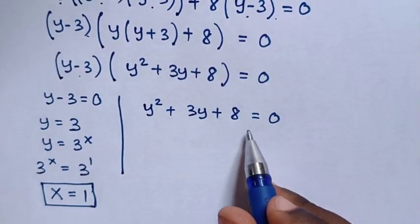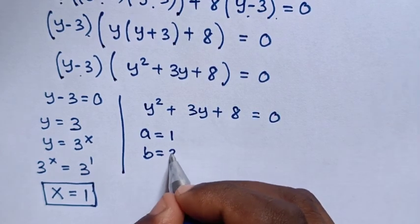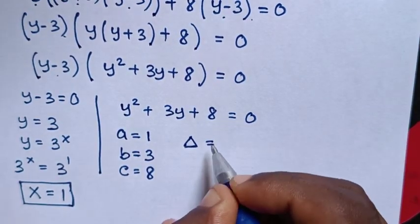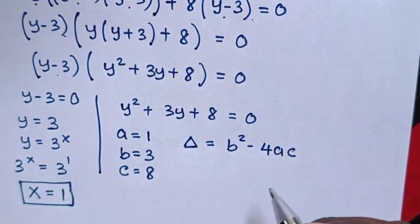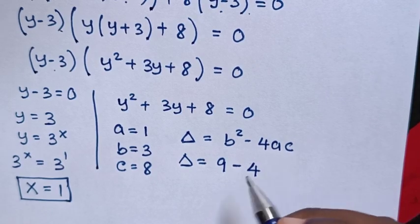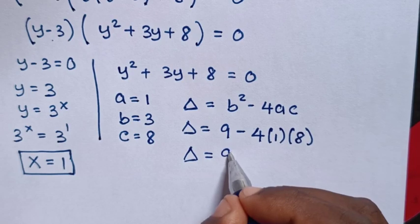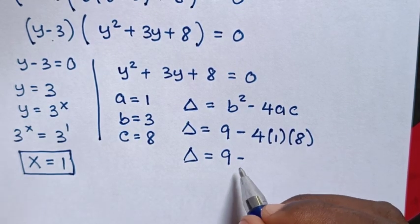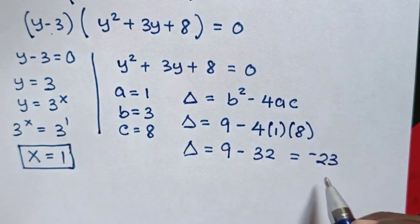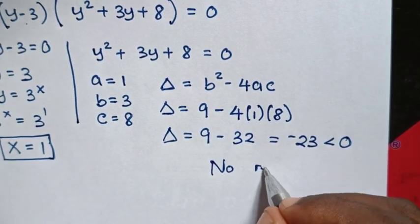To solve from the second solution, which is a quadratic equation: a is equal to the coefficient of y squared, which is 1; b is equal to the coefficient of y, which is 3; and c is equal to the constant, which is 8. From the discriminant formula, discriminant is equal to b squared minus 4ac. So discriminant is equal to 3 squared, which is 9, minus 4 times 1 times 8, which is 32. Then discriminant is equal to 9 minus 32 is negative 23, which is less than 0. Because the discriminant is negative, there is no real solution.